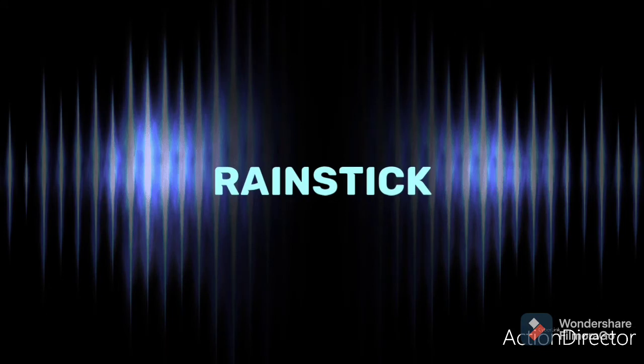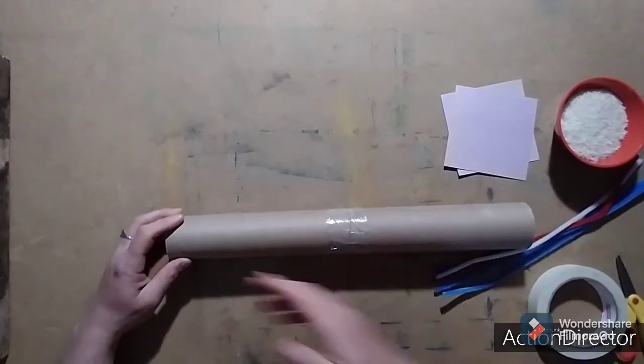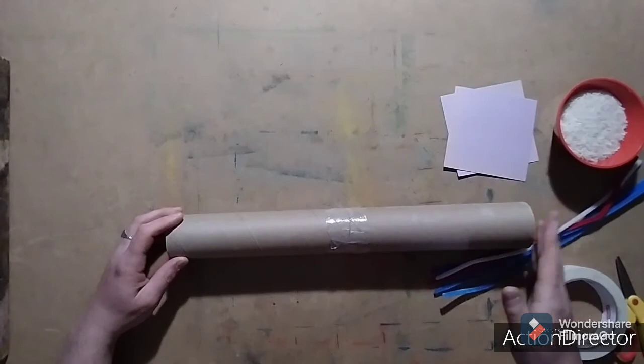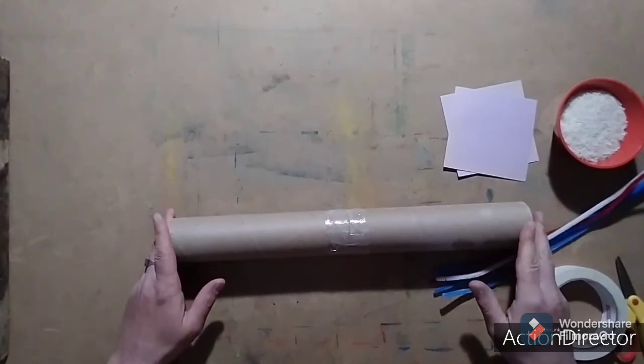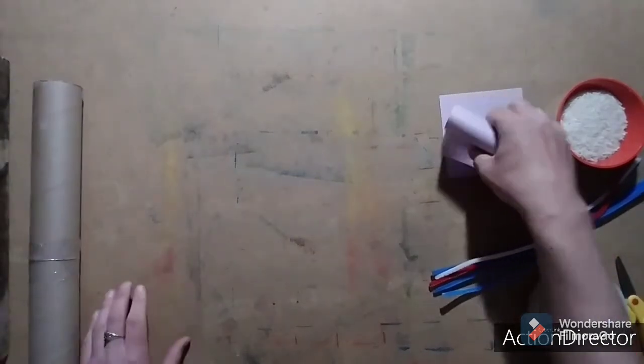Today, we're going to be building a rain stick. Now, start by coloring your cardboard tube with a beautiful pattern of your choice. You can decorate it pretty much any way you'd like. Now, I'm not doing this step to be able to move on to the next more important parts.